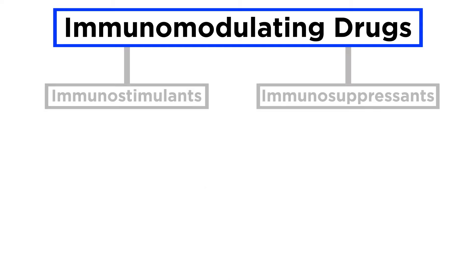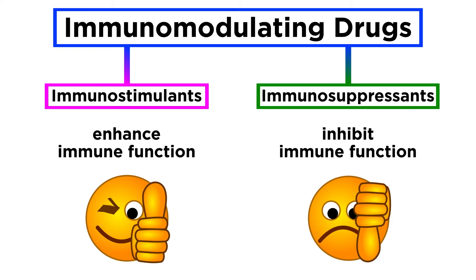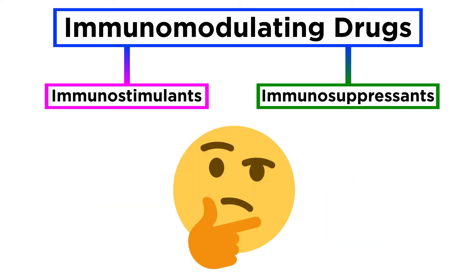Immunomodulating drugs can be broadly separated into a dichotomy of immunostimulants and immunosuppressants. As these names suggest, immune-stimulating drugs work to enhance specific functions of the immune system, while immunosuppressants inhibit immune function. In this tutorial and the next, we will survey pharmacological mechanisms and try to understand how these two drug classes achieve immune system modulation.